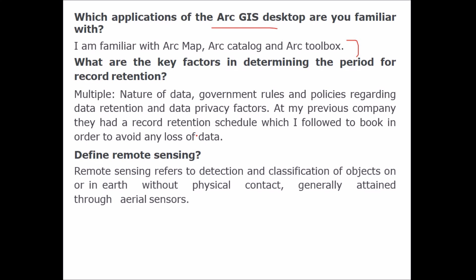Define remote sensing. Remote sensing refers to the detection and classification of objects on Earth without physical contact, meaning remotely. Data is generally obtained through aerial sensors.